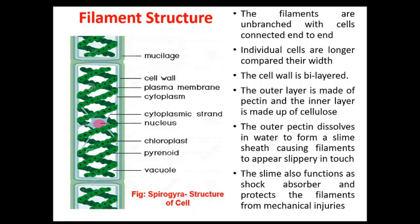The cell wall is bilayered. The outer layer is made up of pectin and the inner layer is made up of cellulose. The pectin in the outer wall dissolves in water to form a slime sheath — that is, a mucilage sheath — causing the filaments to appear slippery to touch. This slime sheath functions as a shock absorber and protects the filaments from mechanical injuries.